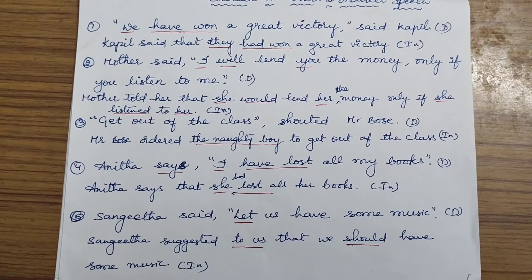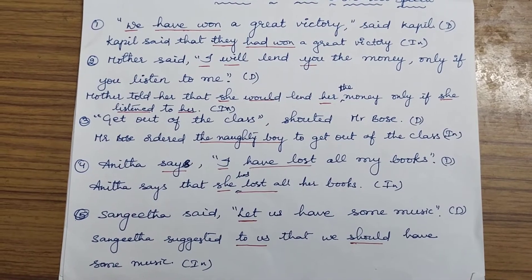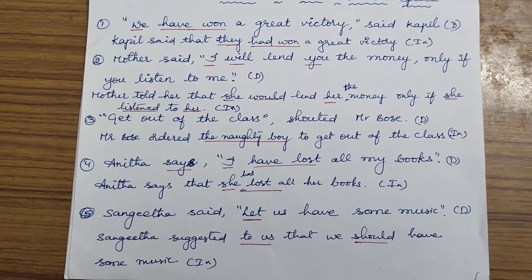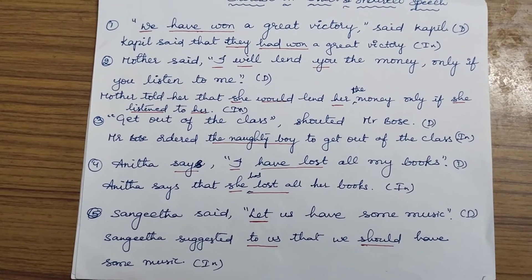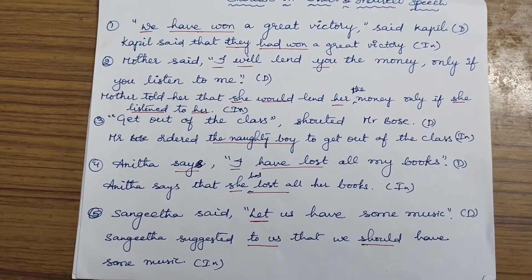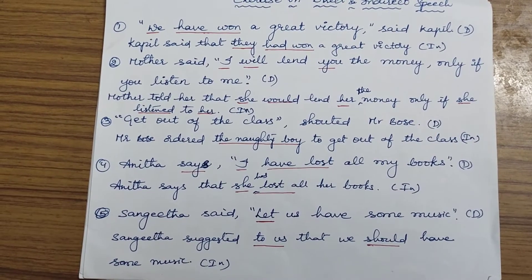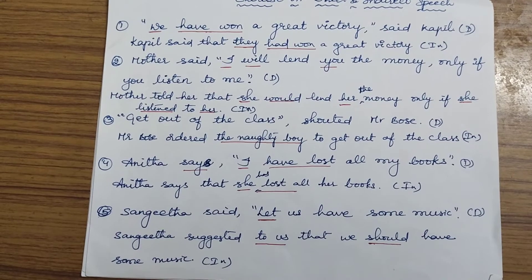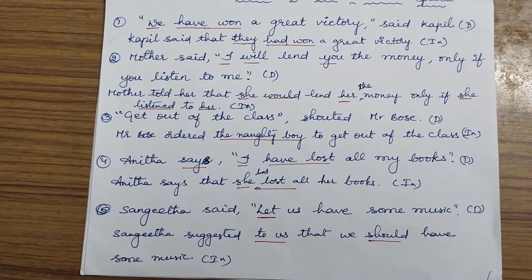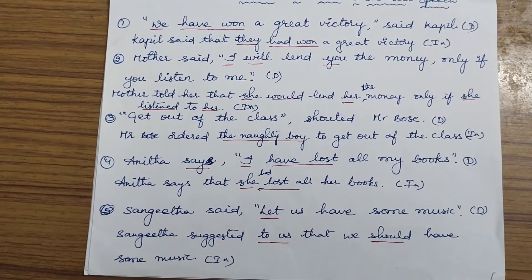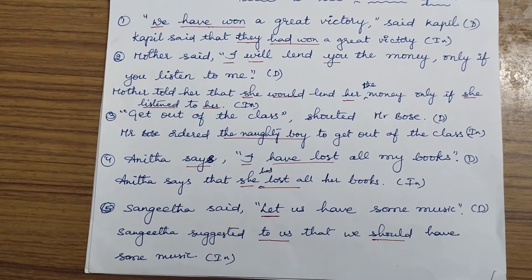First question: 'We have won a great victory,' said couple. It's direct speech because the dialogue is in the exact words spoken by couple. When we change from direct to indirect, it will be: 'Couple said that they had won a great victory.' You can see the underlined words — 'have won' is changed to 'had won', and 'we' (first person plural) is changed to 'they.'